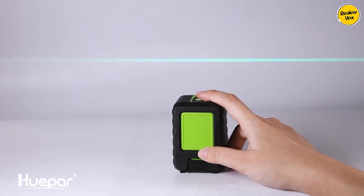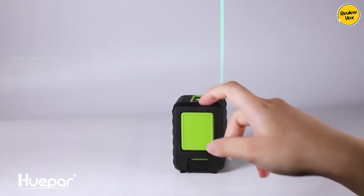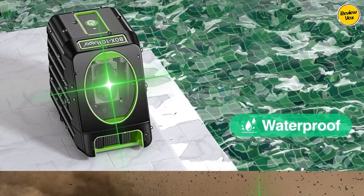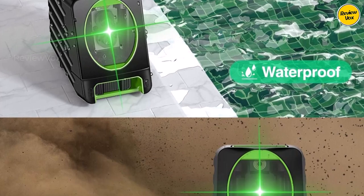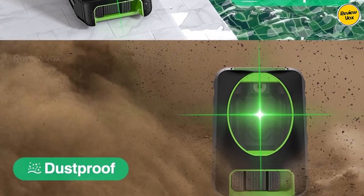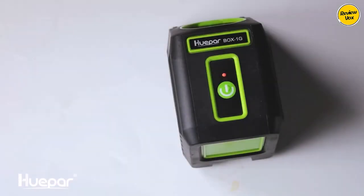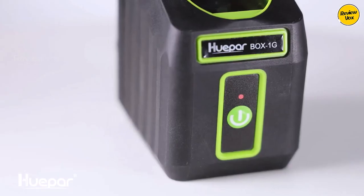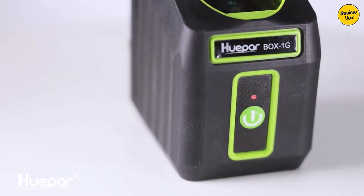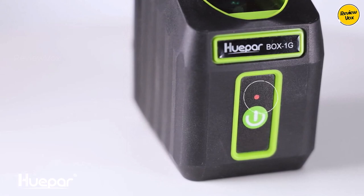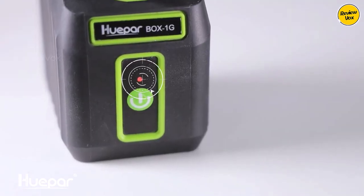Choosing the best laser level depends on your needs. For basic DIY tasks, the Black Plus Decker BDL-190S is a budget-friendly champ. For pros and complex projects, the Hupar Box 1G offers ultimate versatility. But wait, we dive deeper into each option in the video, so you can find your perfect match. Thanks for watching.